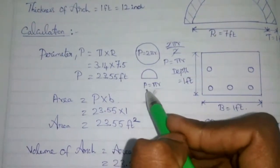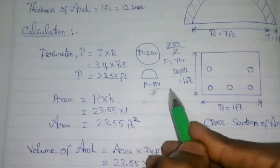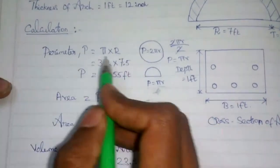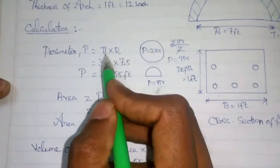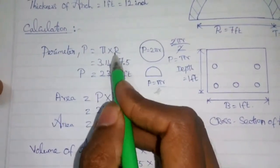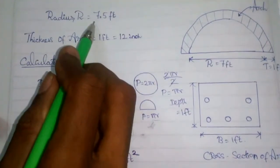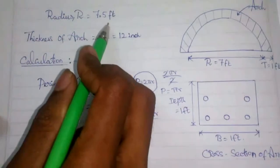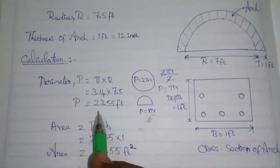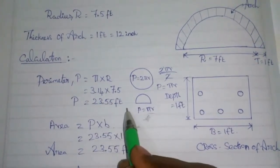That is why we use the perimeter formula πr. Applying it: π r = 3.14 × r. The radius is 7.5 feet. Multiplying, the perimeter of the arch is 23.55 feet.